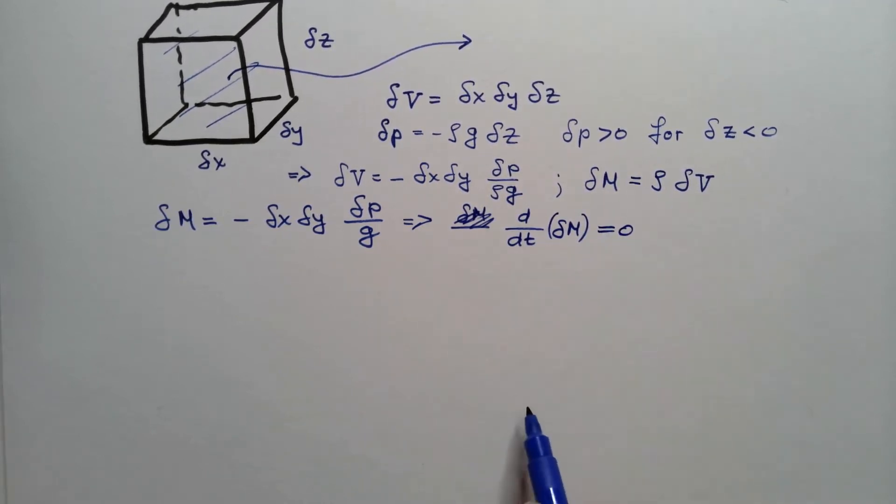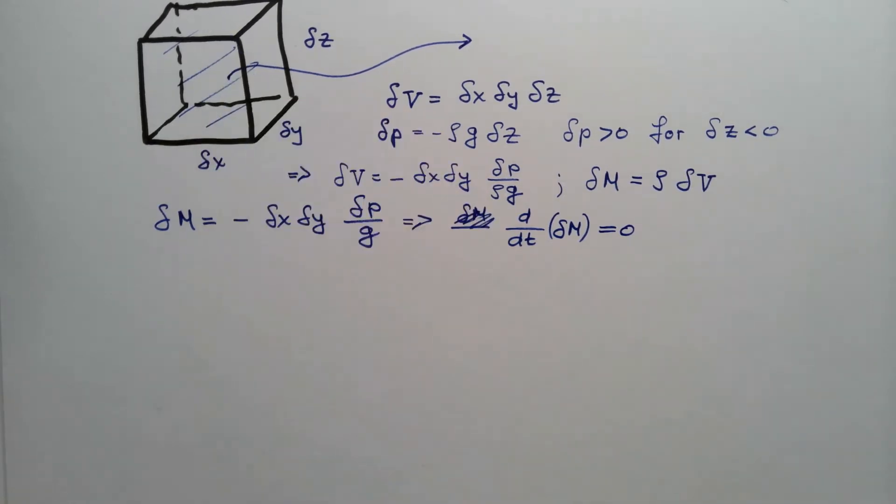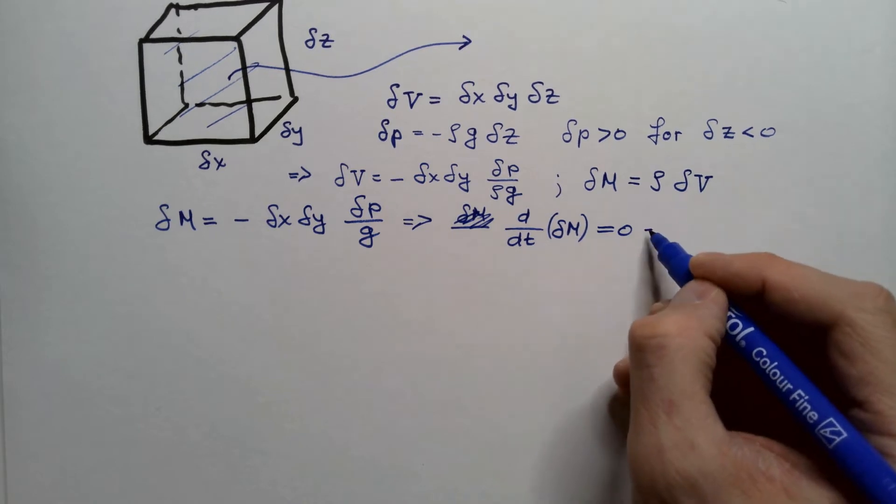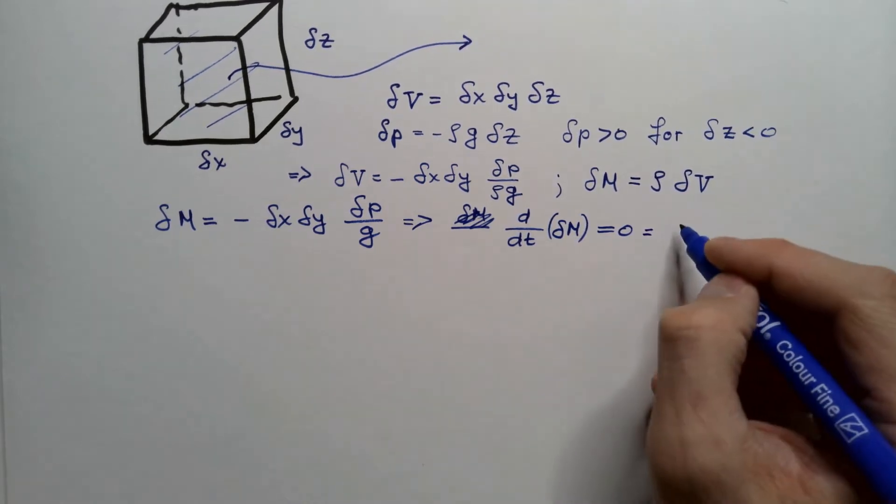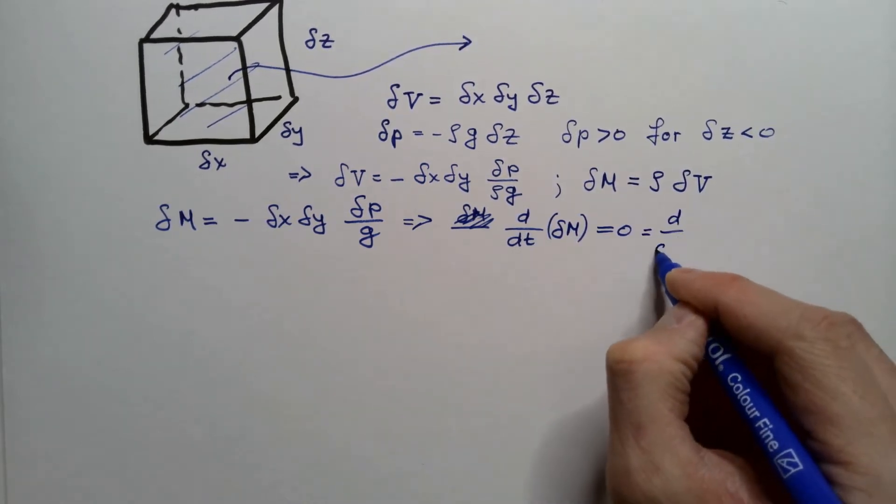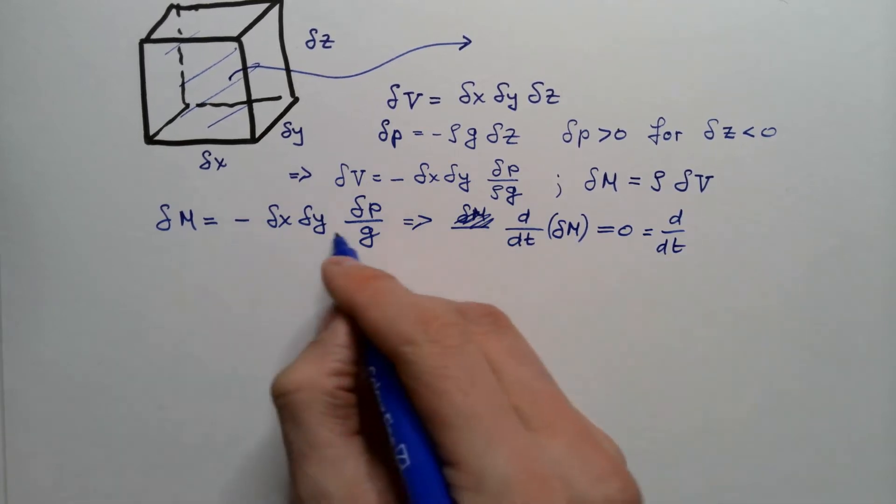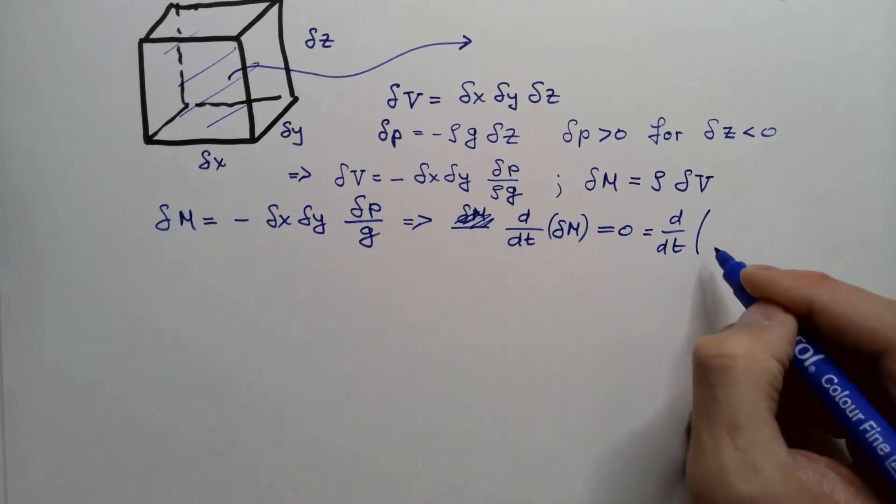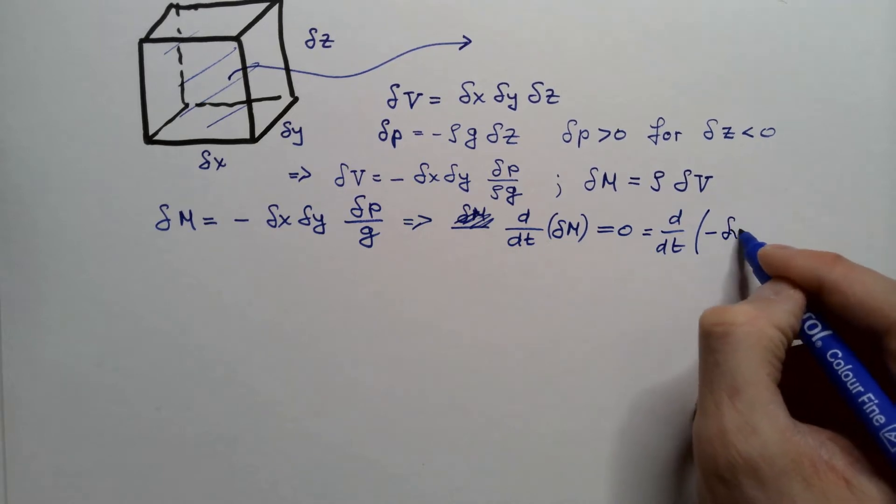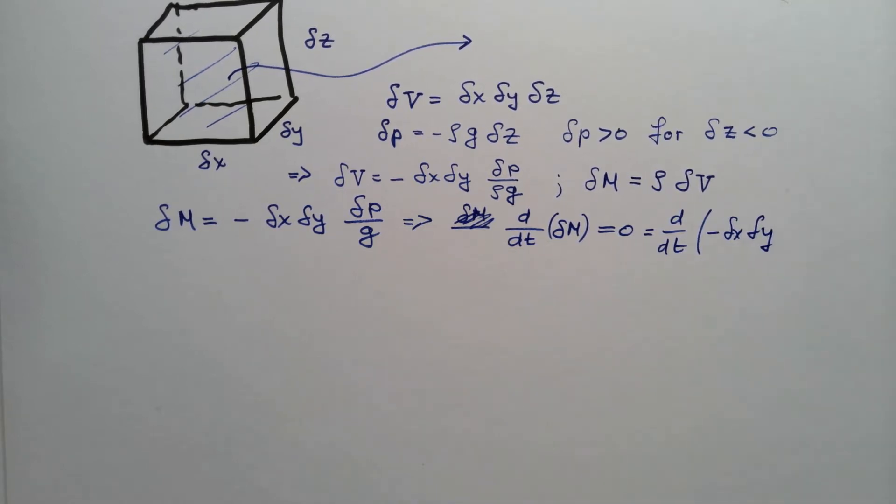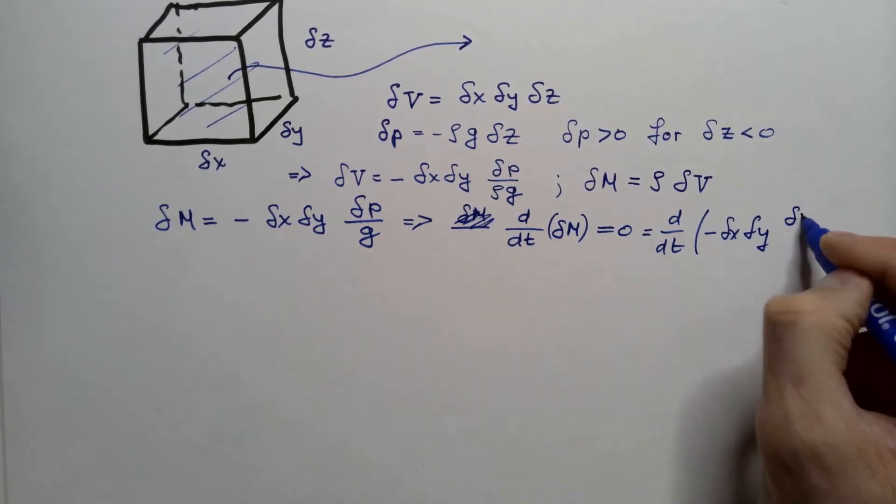Namely, mass following the motion is conserved. This is further equal d dt of delta m, but delta m is this over here, and that is minus delta x delta y delta p over g.